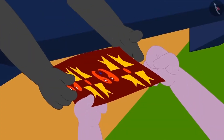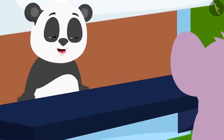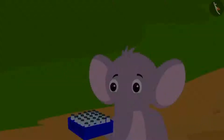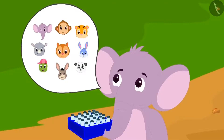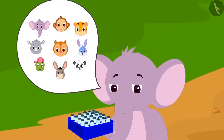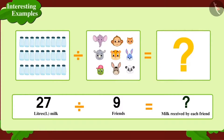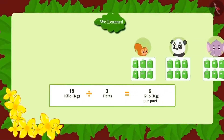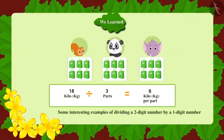Appu went to Golu's dairy to give him the fabric. Golu was delighted and gave Appu twenty-seven liters of milk, saying all nine friends would equally share and drink it. Each of Appu's friends will enjoy three liters of milk. In this lesson, we saw some interesting examples of dividing two-digit numbers by a one-digit number.